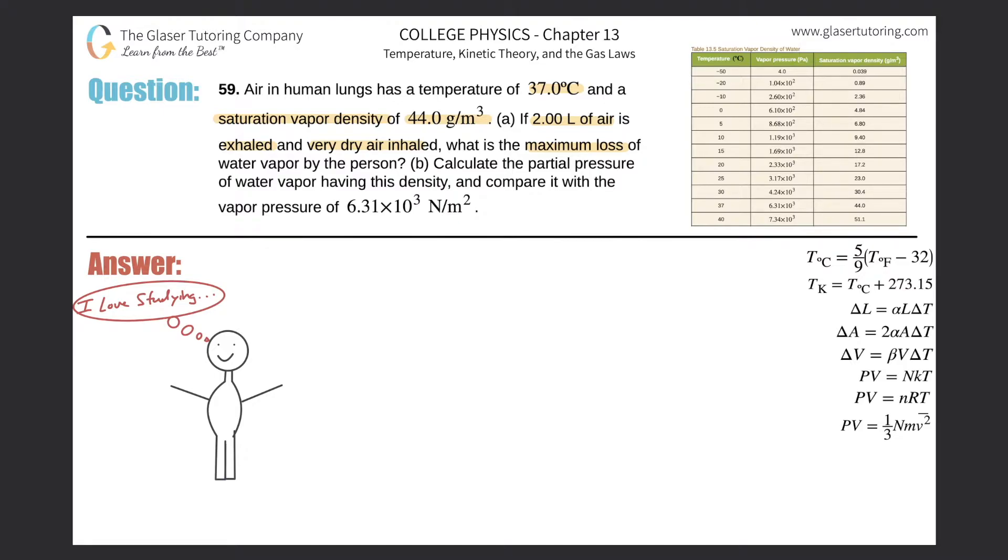What does it mean by maximum loss? What would maximum loss of water vapor be? We would have to assume two things. Let's pretend that this highlighted area represents the volume of air being exhaled. They told us the volume—two liters.